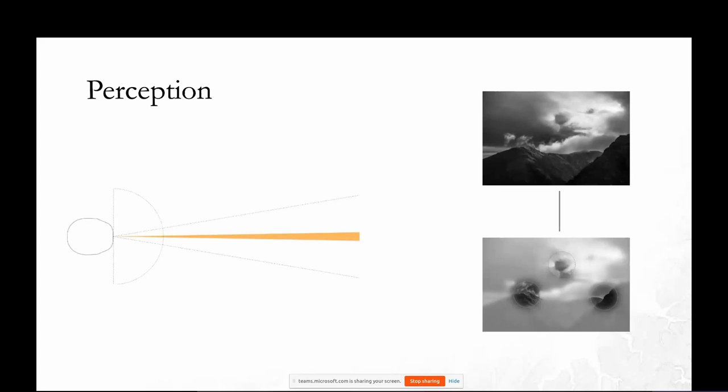There's a little experiment you can run: go somewhere that you're not used to, close your eyes, open them, but keep them straight ahead and try to think about what's beside you, what color it is or what the shape is. You just can't do it because that part of your eye is only seeing in black and white.